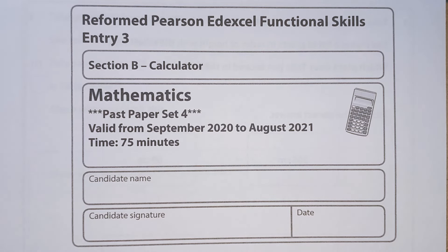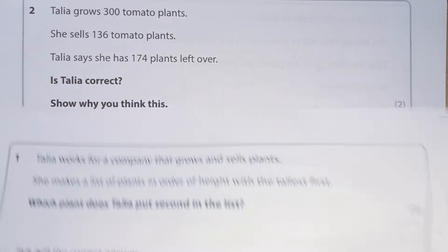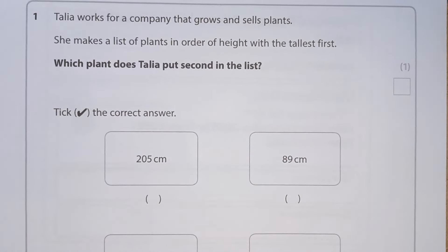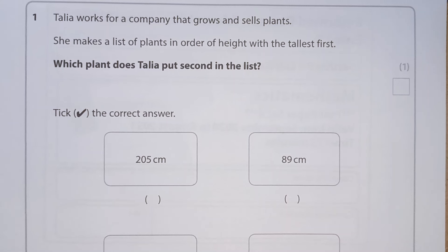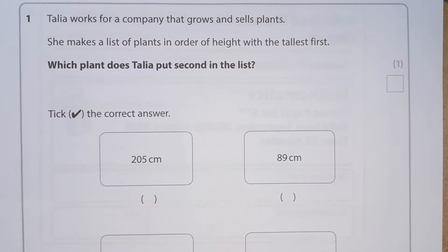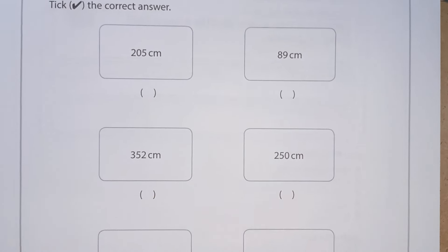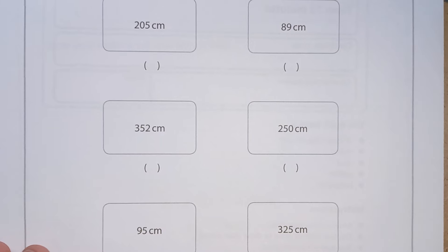Now onto the calculator section. Tanya works for a company that grows and sells plants. She makes a list of plants in order of height with the tallest first. Which plant does Tanya put second in the list? So which is the second tallest plant? We've got six different ones.